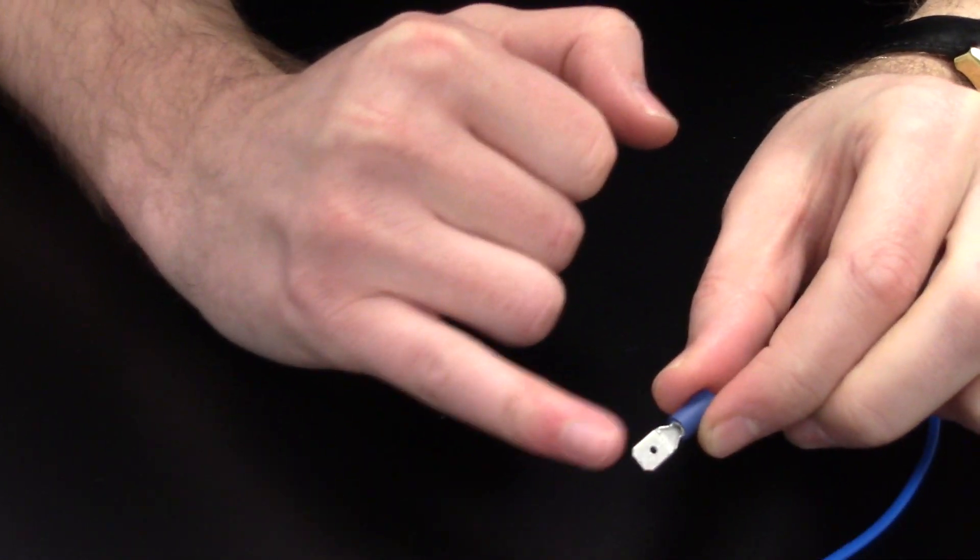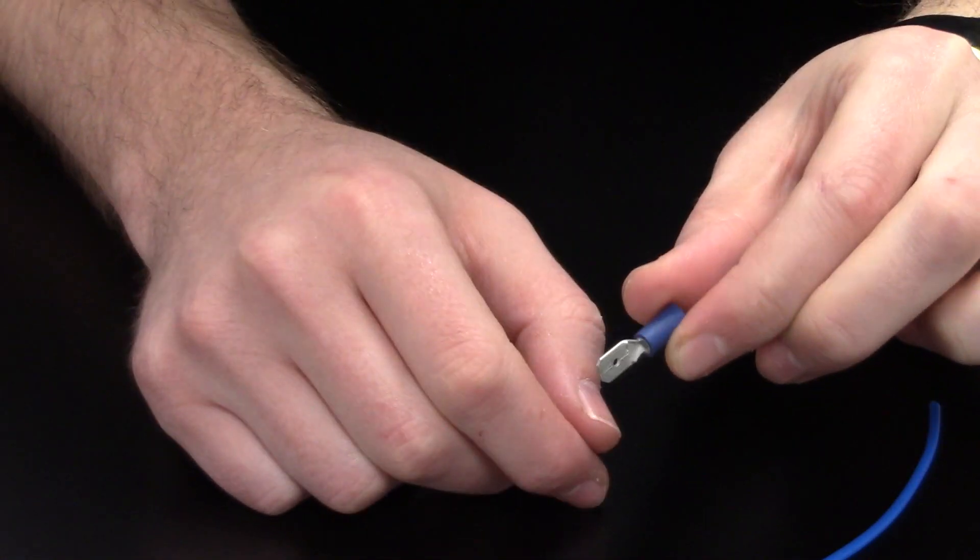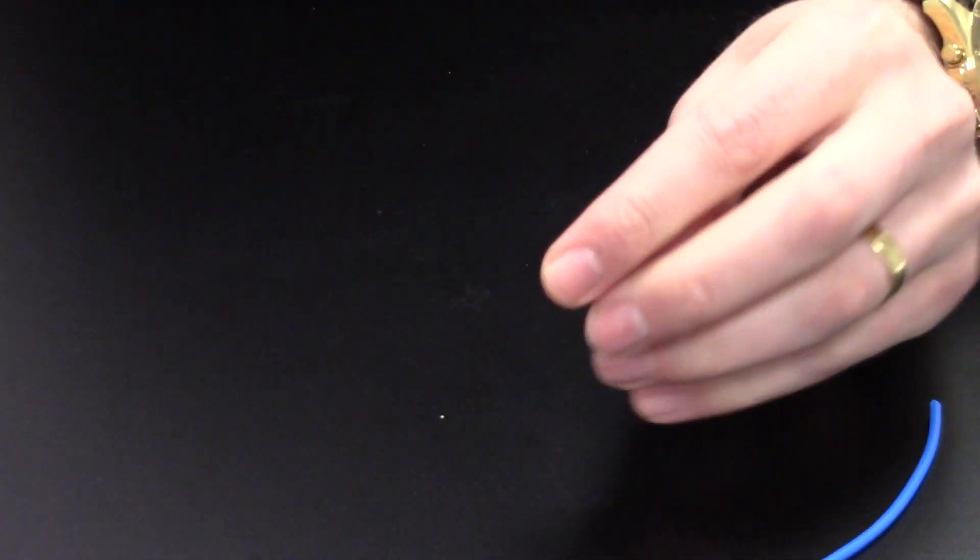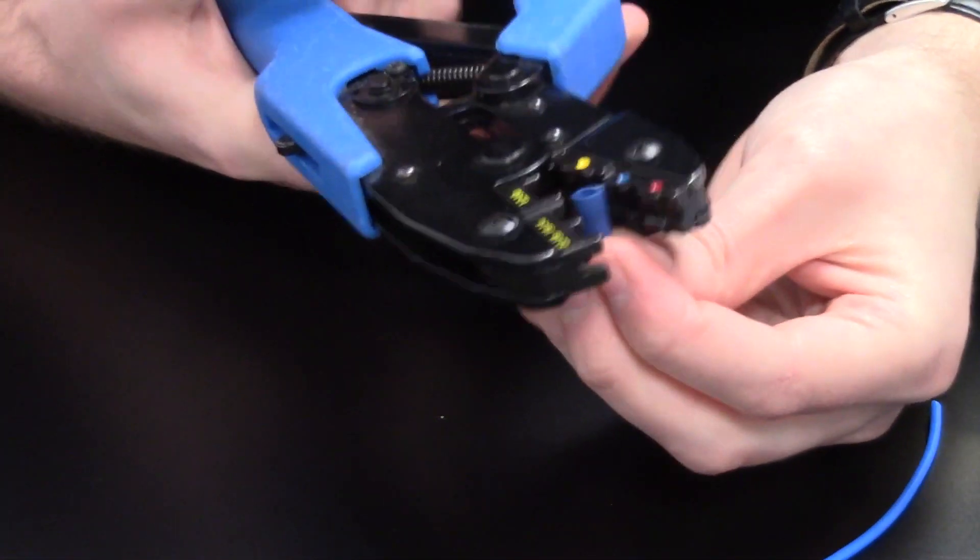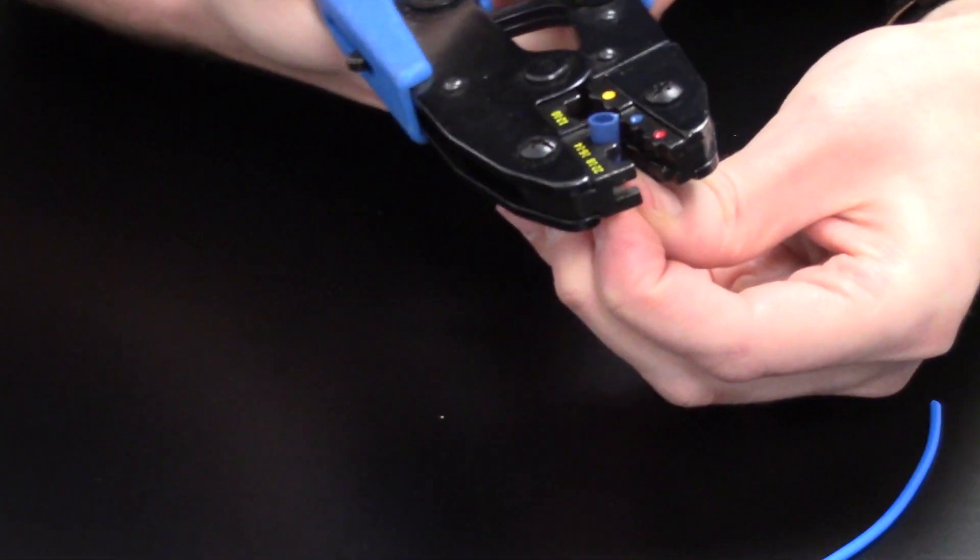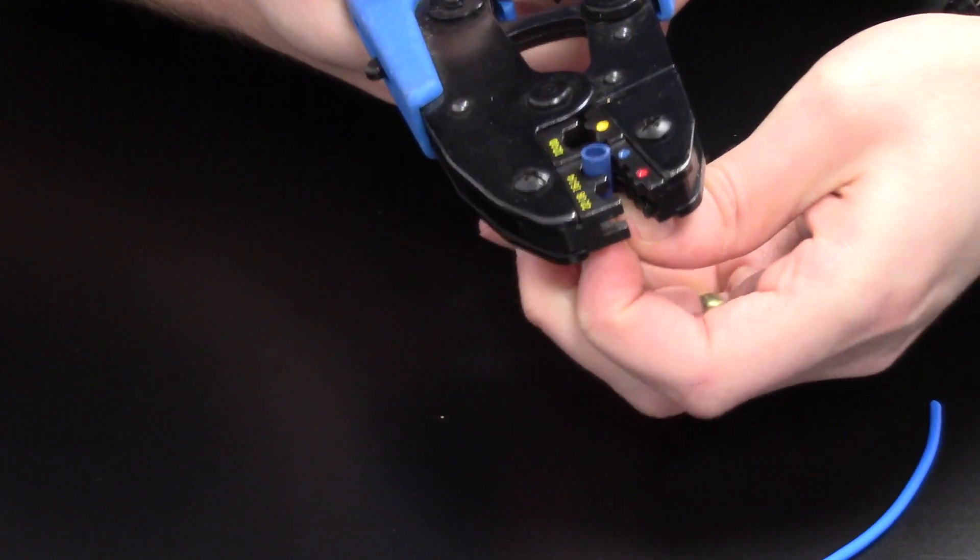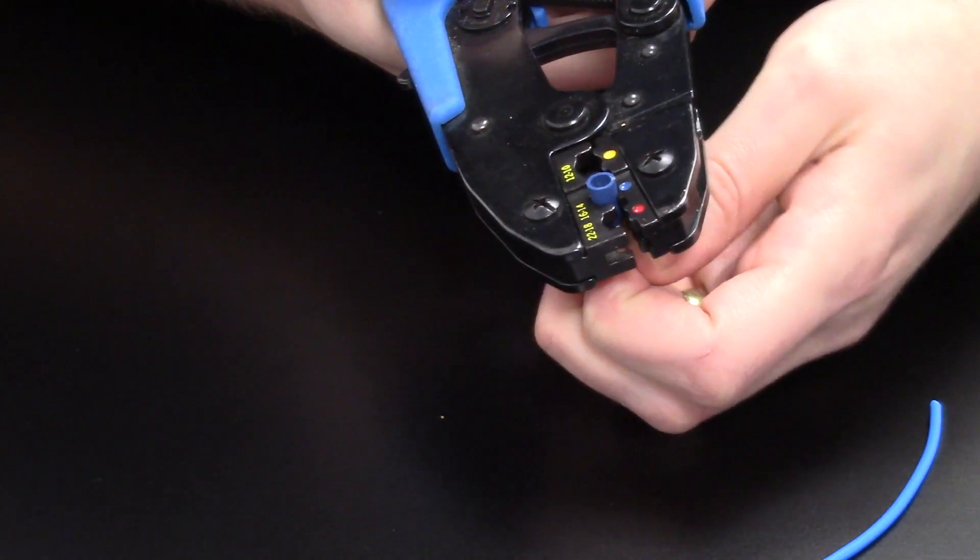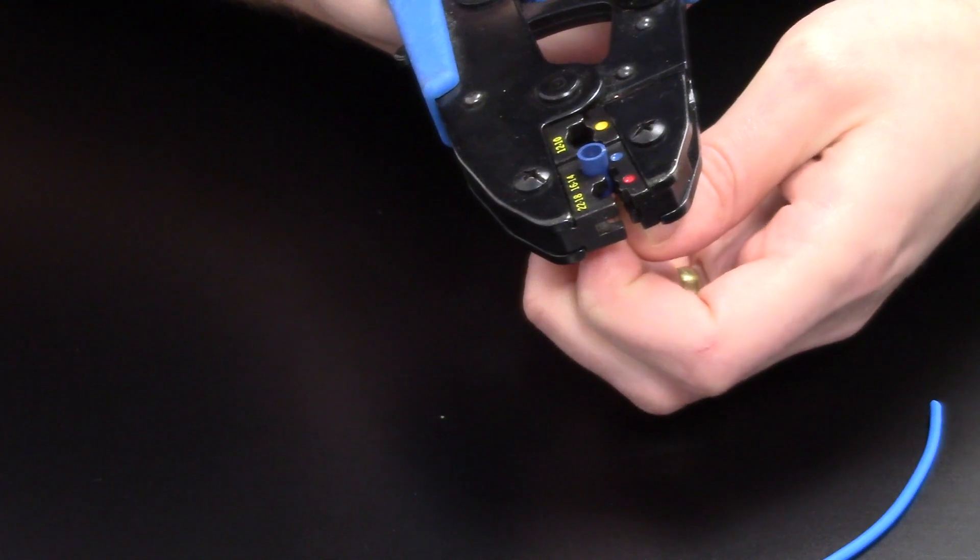We'll show you again with our blue terminal which is for 1.5 to 2.5mm² cable. This is a male blade terminal. Again we select our jaw. We're going to use the colour guide so we have a blue terminal and we'll use the blue jaw.